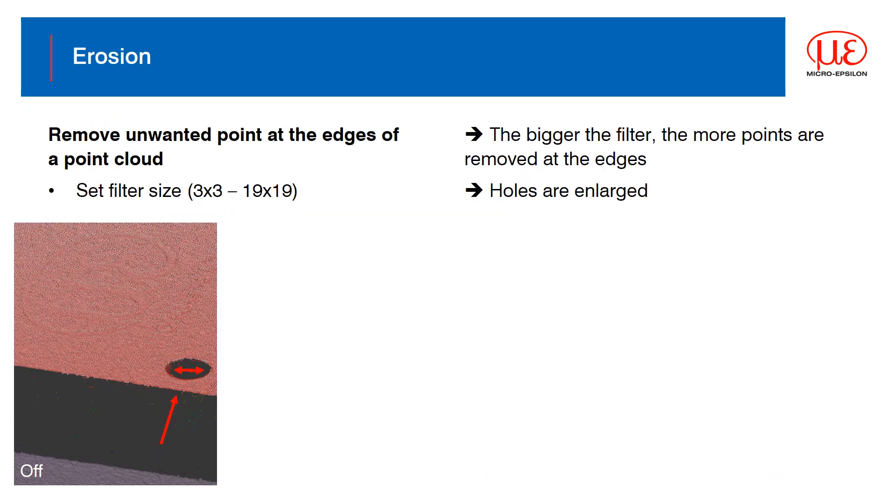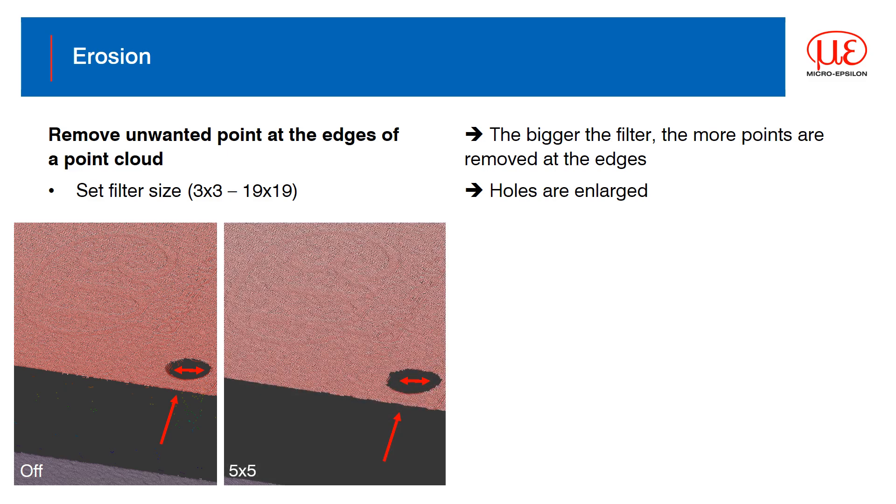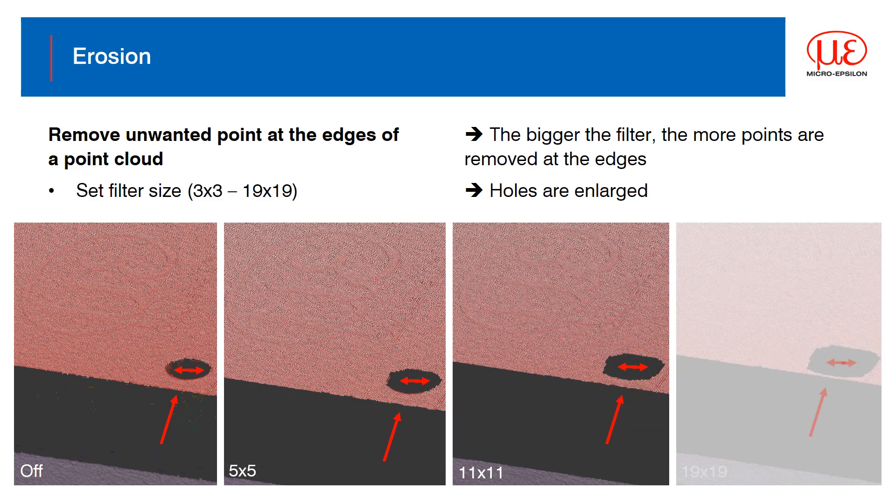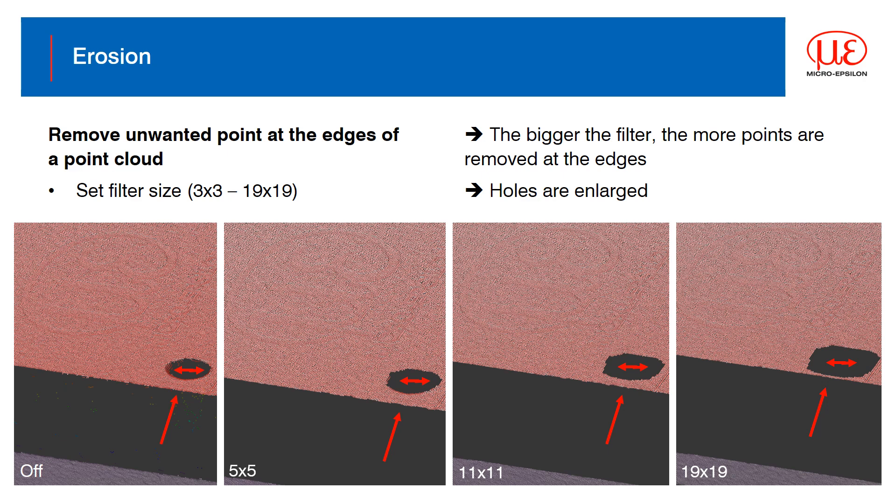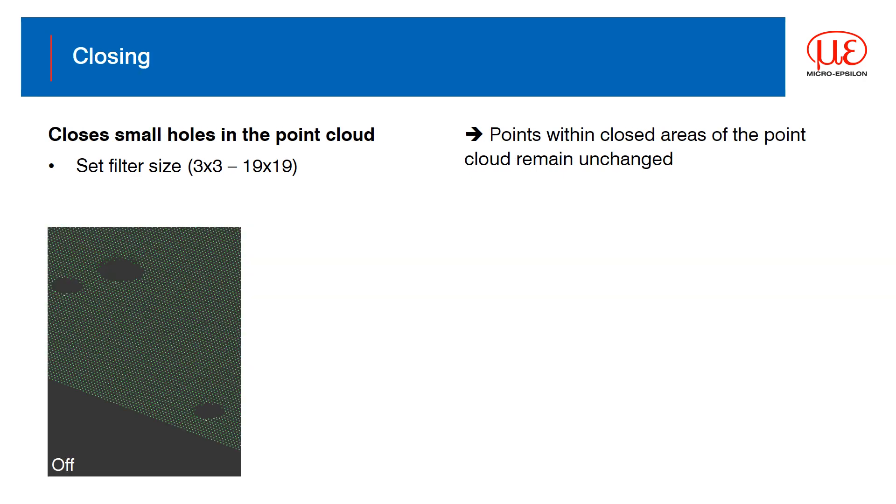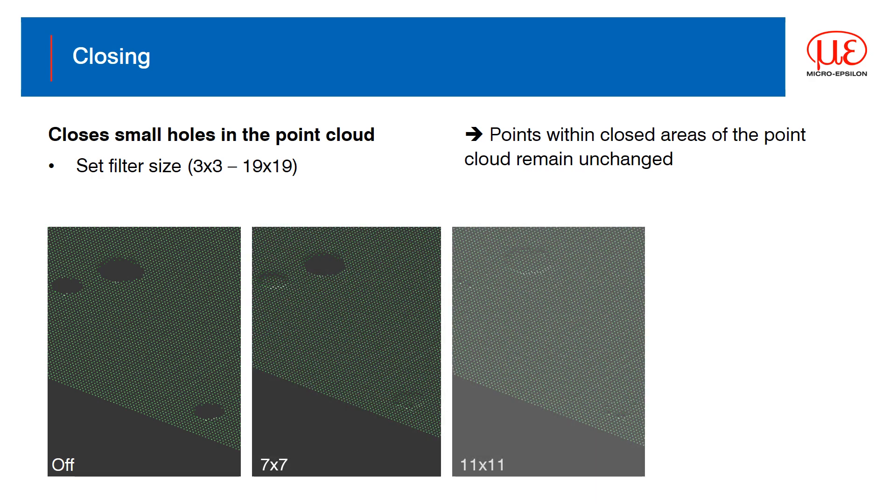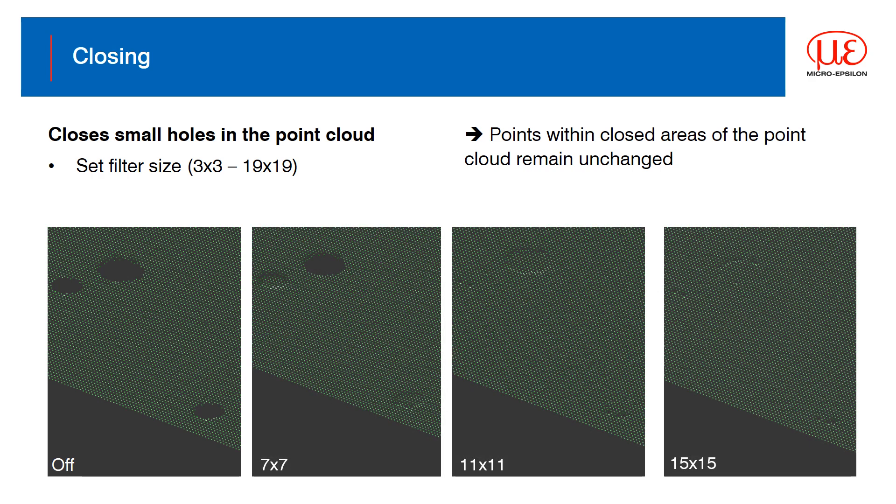Point clouds can be tidied up by using functions like erosion to remove unwanted points at the edge of the cloud, but be careful as holes that are meant to be in your target could also be enlarged. Similarly, you can use closing to fill in the gaps in missing point data that may have been caused through shadowing or poor surface quality.